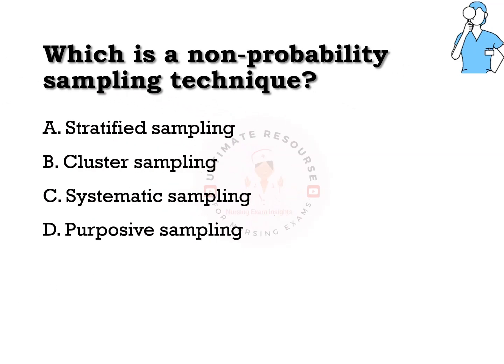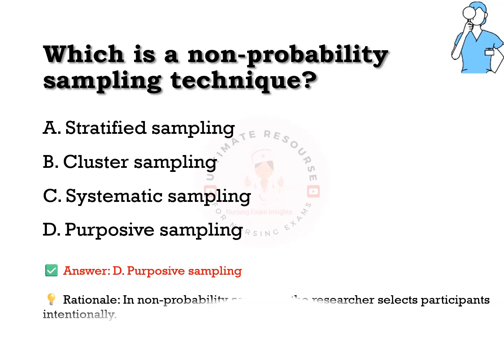Which is a non-probability sampling technique? Options are a) stratified sampling, b) cluster sampling, c) systematic sampling, d) purposive sampling. The answer is d) purposive sampling. In non-probability sampling, the researcher selects participants intentionally.